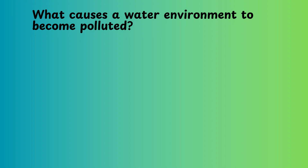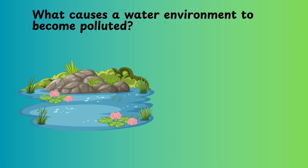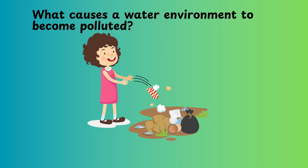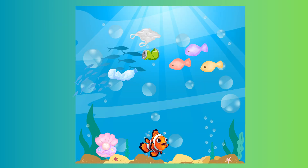What causes a water environment to become polluted? A water environment can become polluted in many ways. One way is when people throw trash like plastic bags and bottles into rivers, lakes, and oceans — this trash can harm and kill animals that live in the water. Another way is when factories and farms release harmful chemicals into bodies of water such as rivers, lakes, and seas. These chemicals can poison the water and make it unsafe for plants and animals.